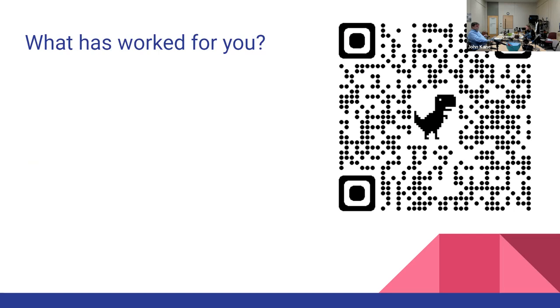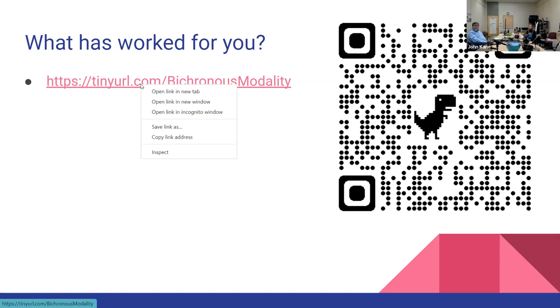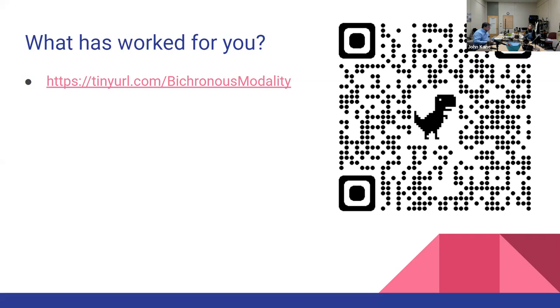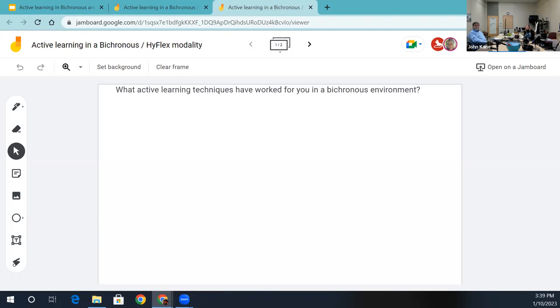Now we're going to ask you for some suggestions. You can either hold your phone up to the QR code image or use the link I'll put in the chat. This will take you to a Google Jamboard — that's the whiteboard we were talking about. Students can add sticky notes using the sticky note icon on the left side. One of the nice things about it is that it's anonymous, making it a really good way of getting feedback on how your class is going.